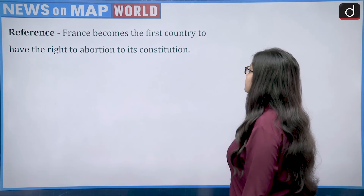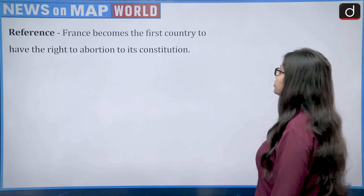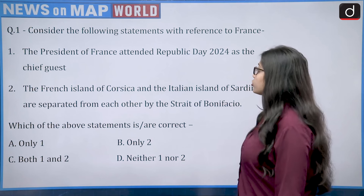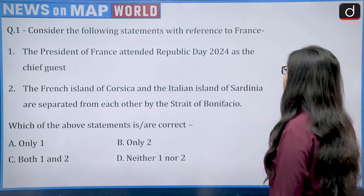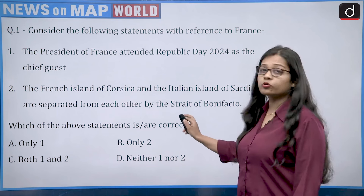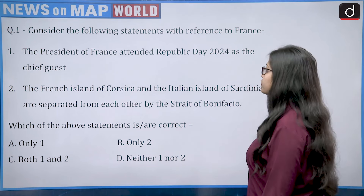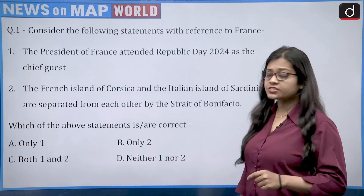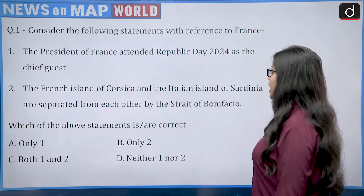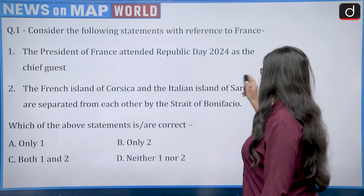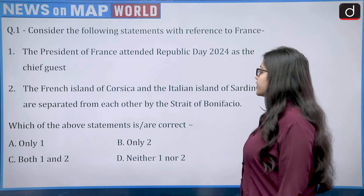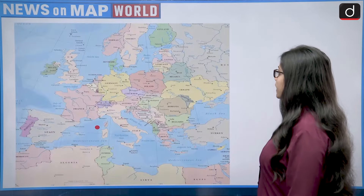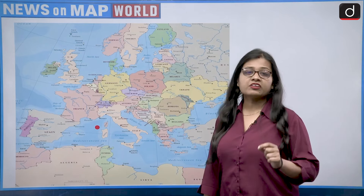The reference here is that France became the first country to enshrine the right to abortion in its constitution. The question asks us to consider two statements about France: first, that the President of France attended Republic Day 2024 as the chief guest; and second, that the French island of Corsica and the Italian island of Sardinia are separated from each other by the Strait of Bonifacio.